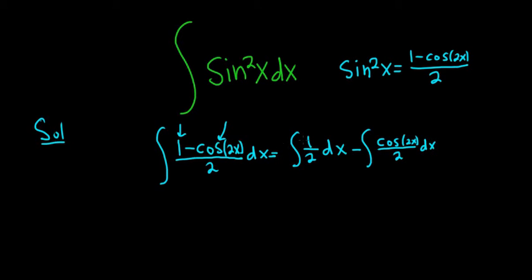Now a good step might be to pull this 1 half out. Likewise, in the second integral, the 2, we can write that as 1 half and also pull it out. So we can write this as 1 half times the integral of dx. It's really just 1 dx, if you want to think of it that way.